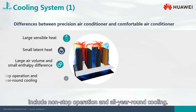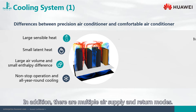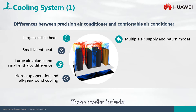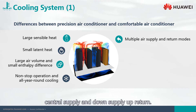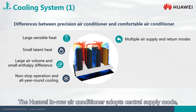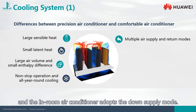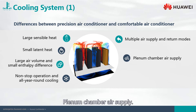Other benefits of the precision air conditioner include non-stop operation and all year round cooling. In addition, there are multiple air supply and return modes. These modes include up supply down return, up supply up return, central supply, and down supply up return. The Huawei in-row air conditioner adopts central supply mode and the in-room air conditioner adopts the down supply mode.